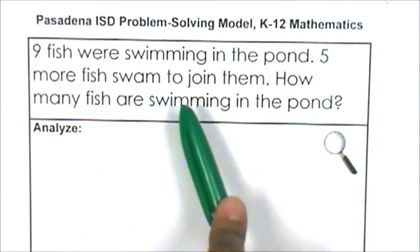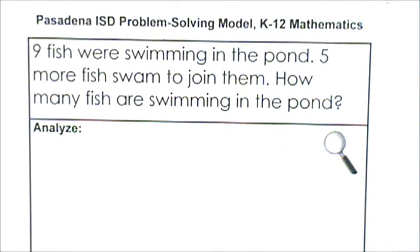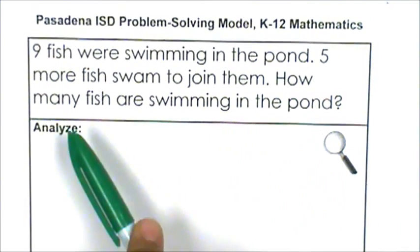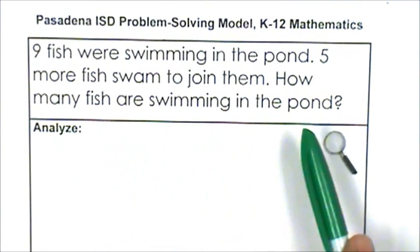Five more fish swam to join them. Oh, five fish started swimming too, but these are different fish. How many fish are swimming in the pond?